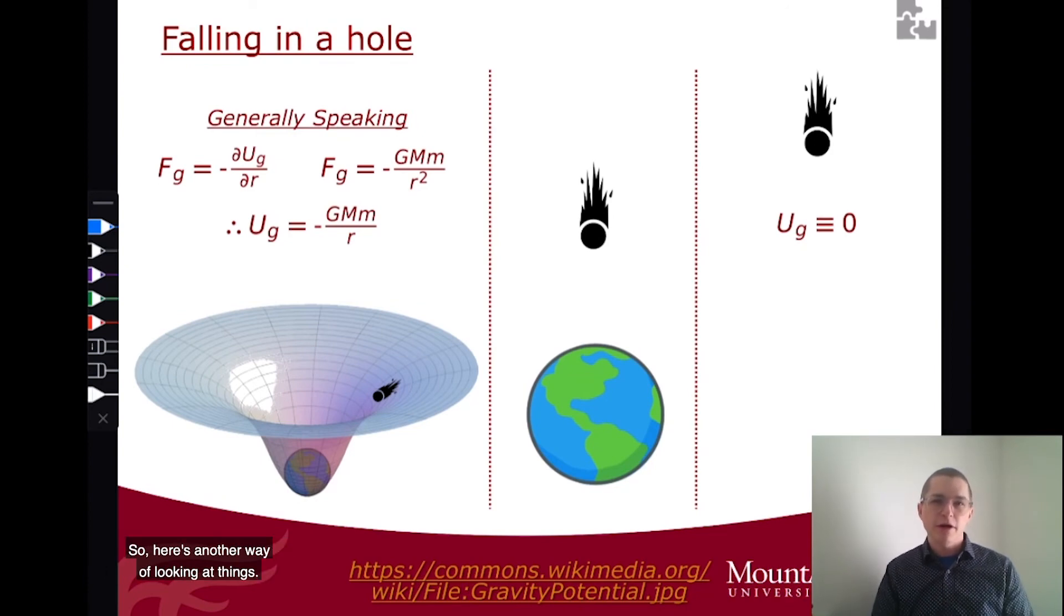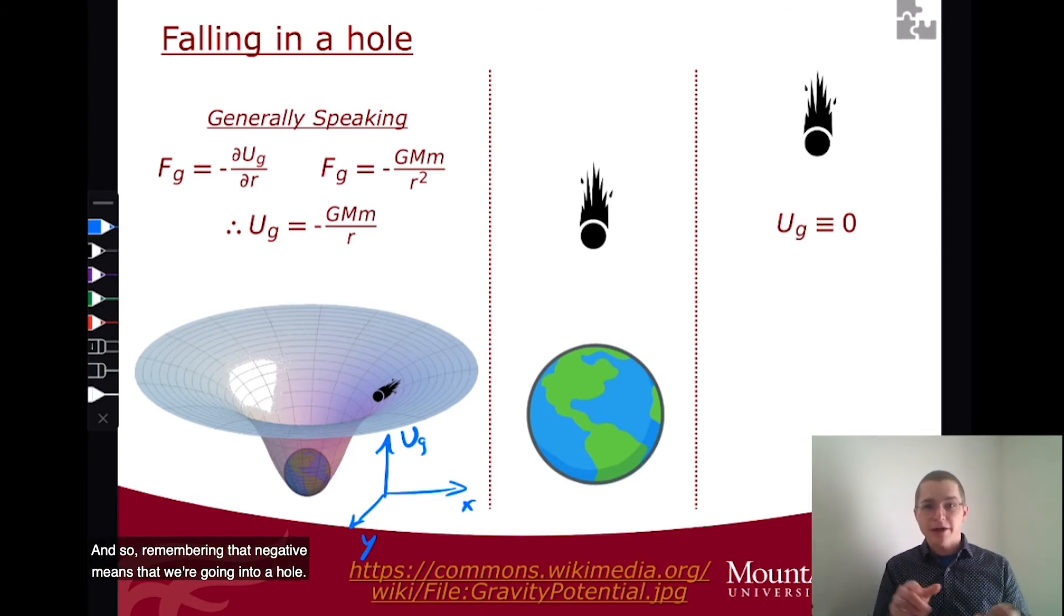So here's another way of looking at things. We can look at the gravity that's produced by something as, well, let's compress our spatial dimensions into just X and Y, and in the third dimension, we'll get the potential energy. And so remembering that negative means that we're going into a hole.